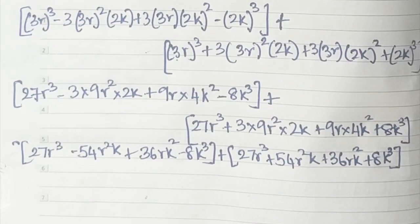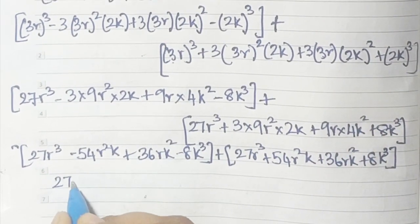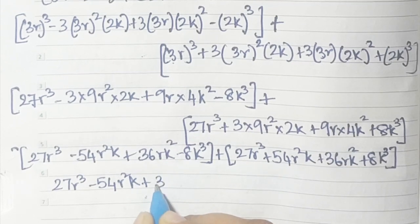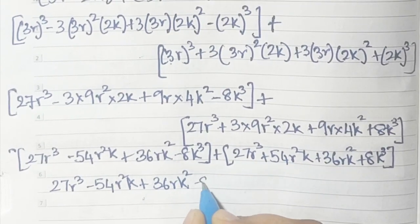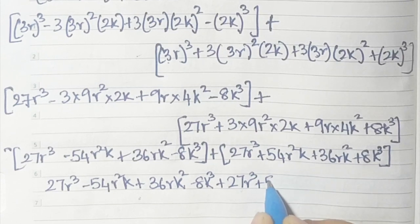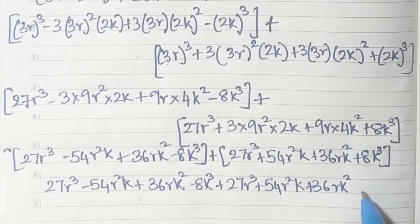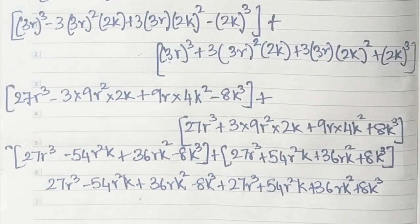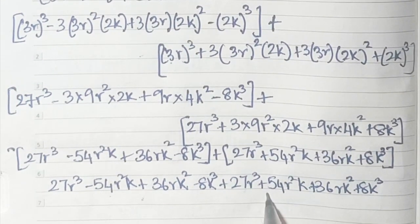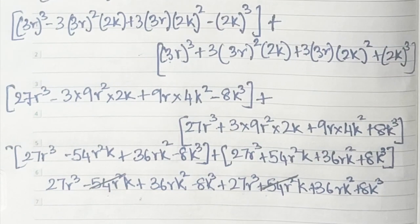Now we open the brackets. Since there's a positive sign in front, the whole first bracket comes down as it is: 27r³ - 54r²k + 36rk² - 8k³. Plus the second bracket: 27r³ + 54r²k + 36rk² + 8k³. Now cancel what we can: -54r²k and +54r²k cancel, and -8k³ and +8k³ cancel.